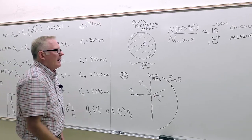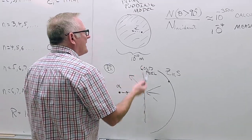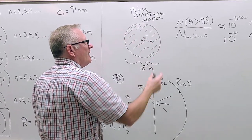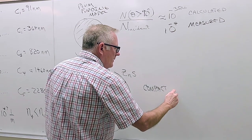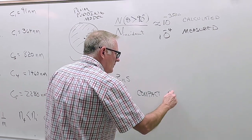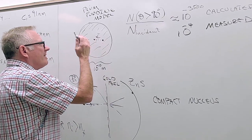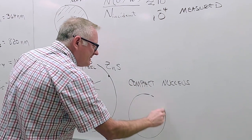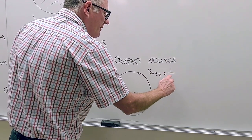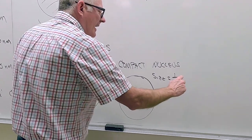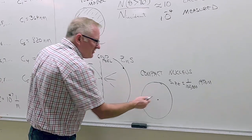Rutherford concluded that the only way to explain this is if there's a compact nucleus — the positive charge isn't spread out like a pudding, it's concentrated. He determined the size of the nucleus is about 1/100,000 the size of the atom. That means a few alpha particles would bounce back because they'd run into that solid nucleus.